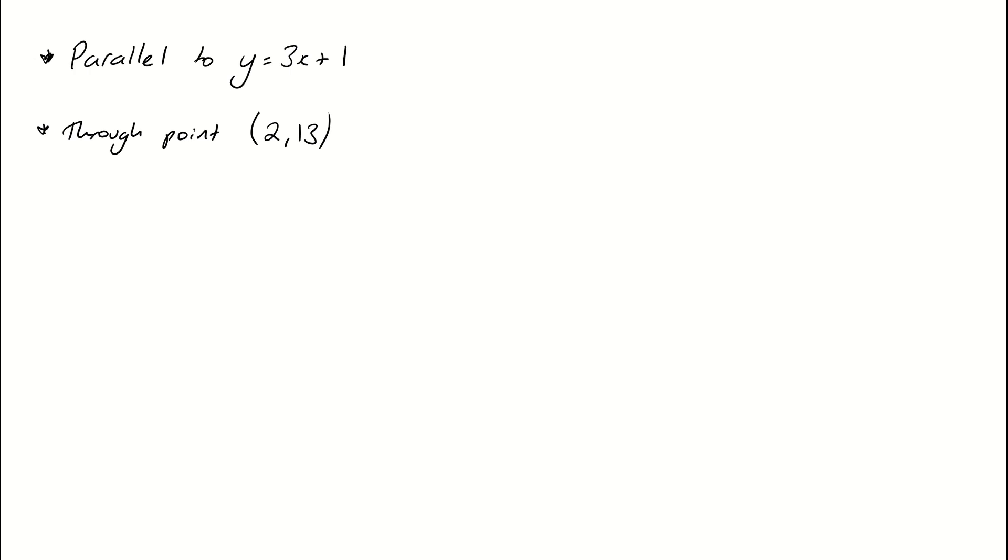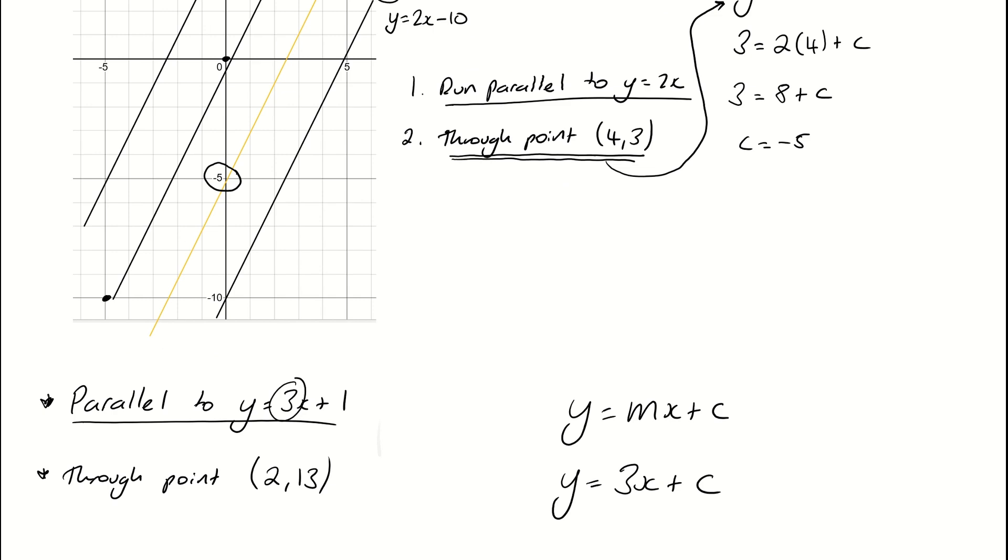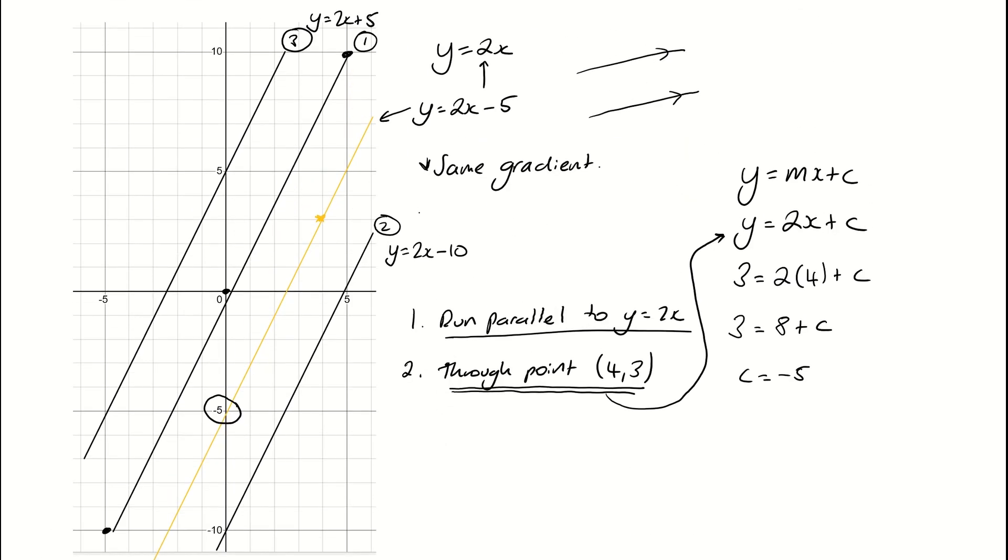So I know that the equation of any linear line has to be y equals mx plus c. And if it's going to be parallel to y equals 3x plus 1, then it has to share the same gradient. And the gradient of this line is 3. So we have to have the same gradient. We know that for it to be parallel. The only other thing I've got to think about now is how high, up or down, do I want my line to be? If you think about what we did up here, do I want it to be line number 1?